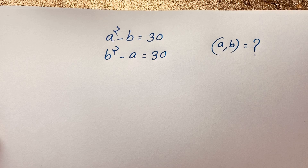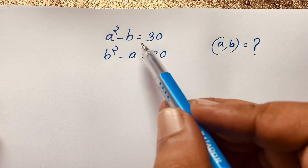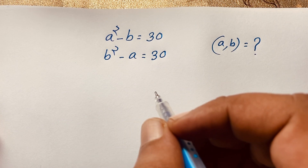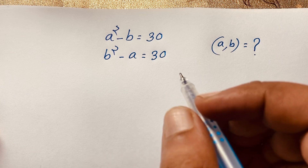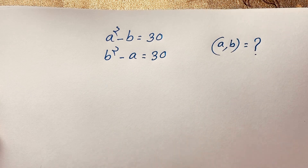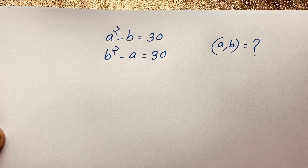Hello everyone. In this video we have solved a nice algebraic expression: A squared minus B is equal to 30, and B squared minus A is equal to 30. We have to find out what is the value of A and B in this Math Olympiad question. It is a nice Math Olympiad question.